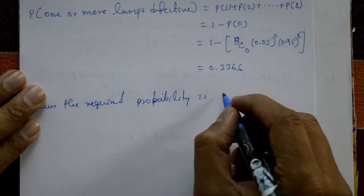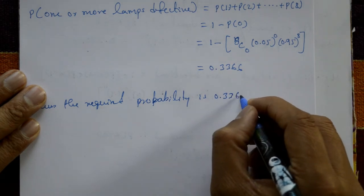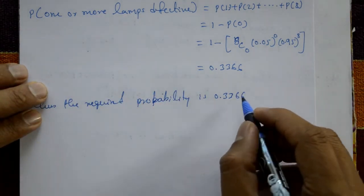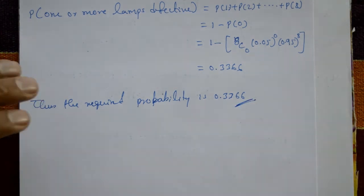Thus the required probability of one or more lamps defective is 0.3366. This is the required solution.